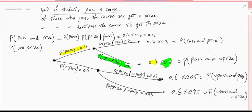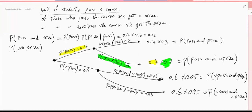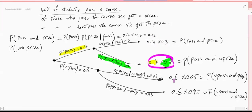The branches of the probability tree give us all the 'AND' possibilities. The question was: what is the probability of no prize? Once you have the probability tree, you simply circle the outcomes that make you happy. No prize appears in two branches: pass & no prize (0.28) and not pass & no prize (0.57). Add them together: 0.28 + 0.57 = 0.85. That's the answer.